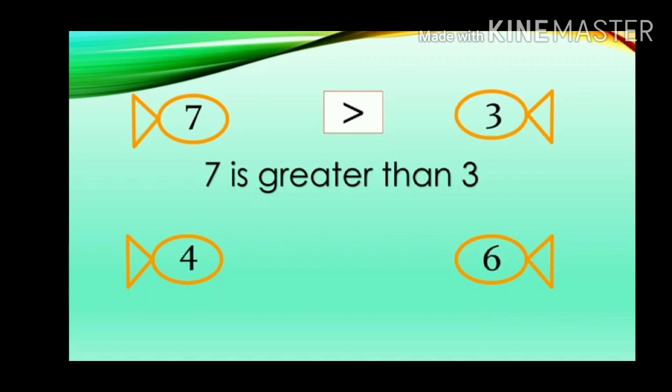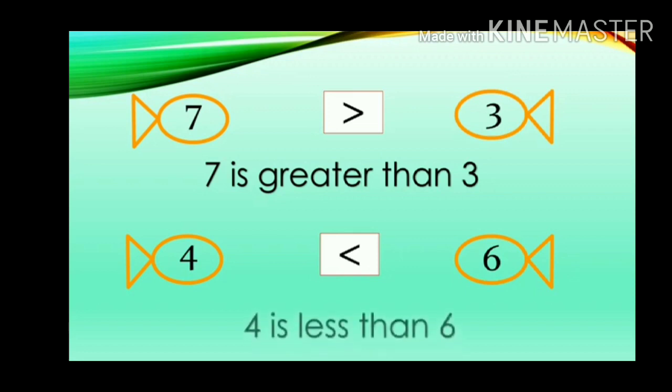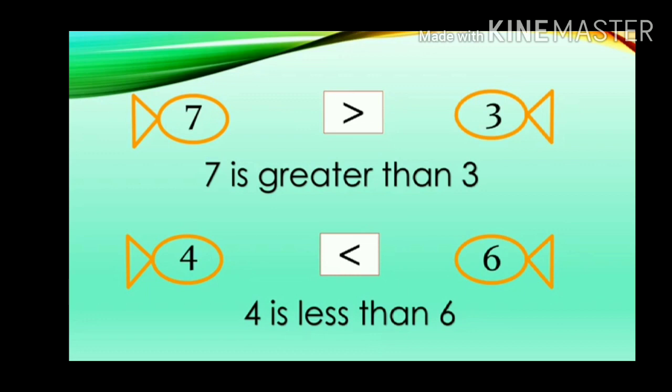Now we will see examples. Which is greater and which is smaller — 7 or 3? Seven is the big number, so 7 is greater than 3. Next, 4 and 6 — which is smaller and which is greater? Four is smaller and 6 is greater, so 6 is greater than 4 and 4 is less than 6.